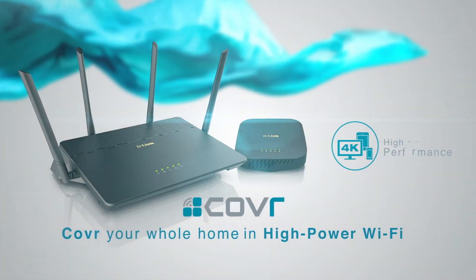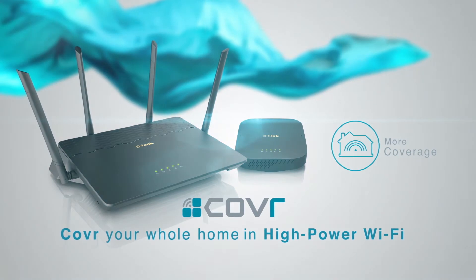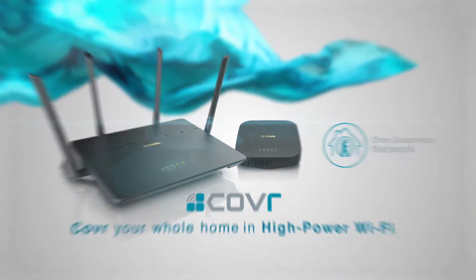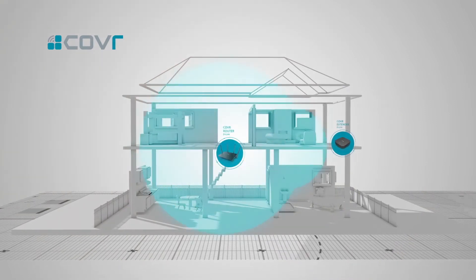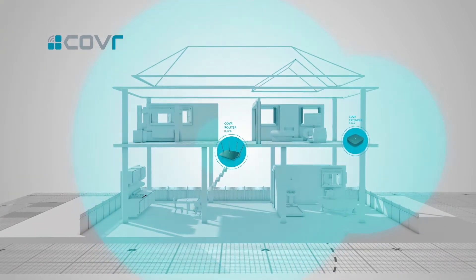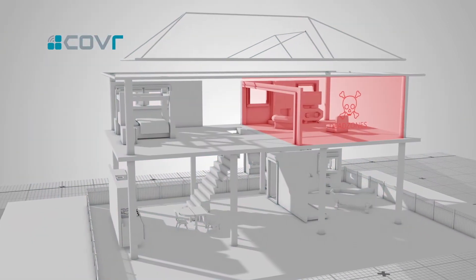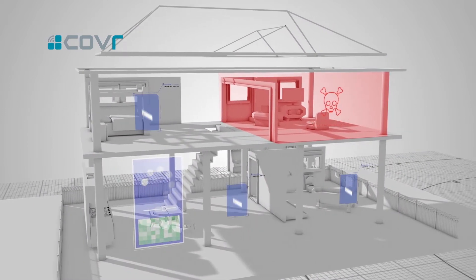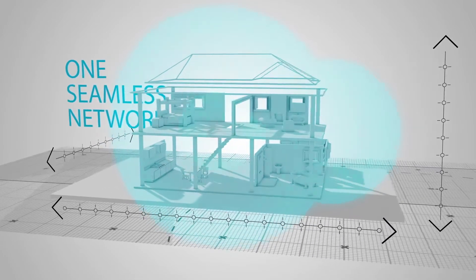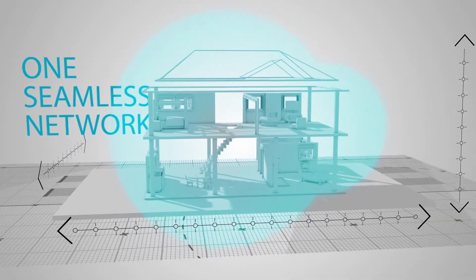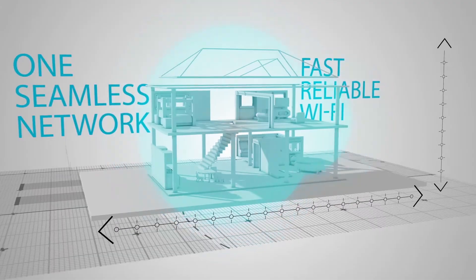Cover by D-Link: high performance, more coverage, one seamless network. Say hello to Cover, the next generation Wi-Fi system that offers all the coverage without the compromise. It eliminates Wi-Fi dead zones, buffering, and lag, and the need for multiple networks, giving you one seamless network that covers every square inch of your home with fast, reliable Wi-Fi.